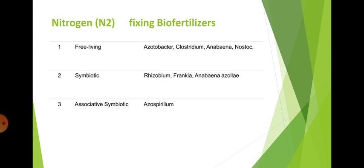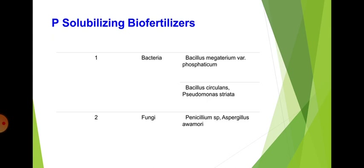Nitrogen fixing biofertilizers include: free living types such as Azotobacter, Clostridium, Anabaena, and Nostoc; symbiotic types such as Rhizobium, Frankia, and Anabaena azollae; and associative symbiotic types such as Azospirillum.